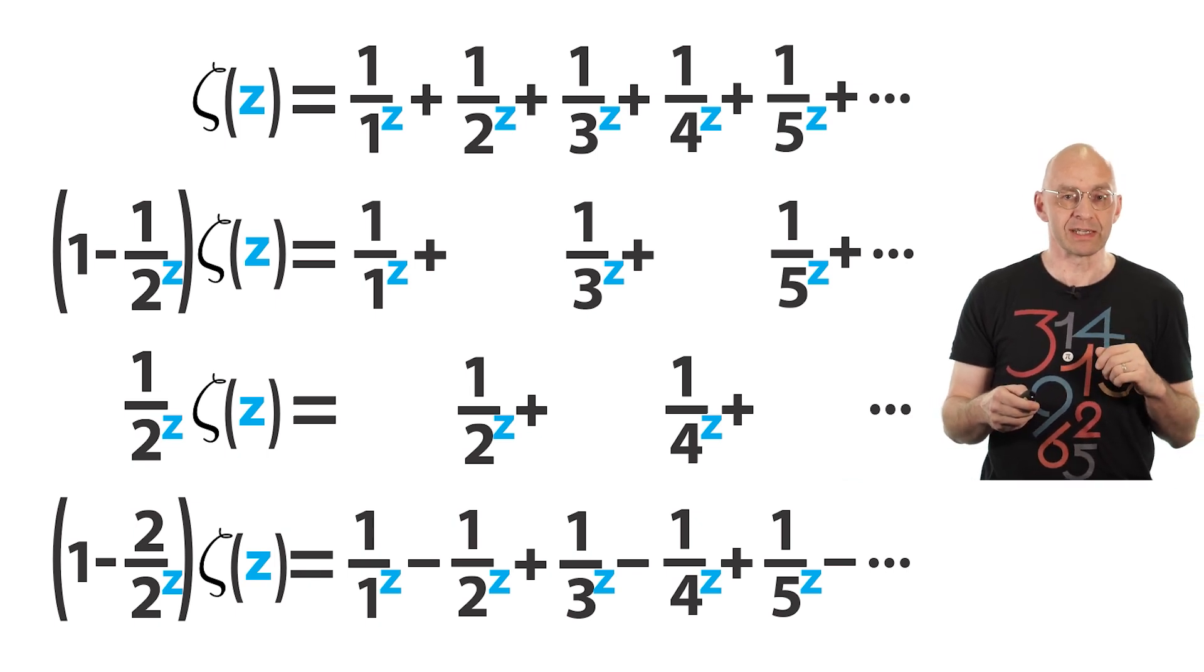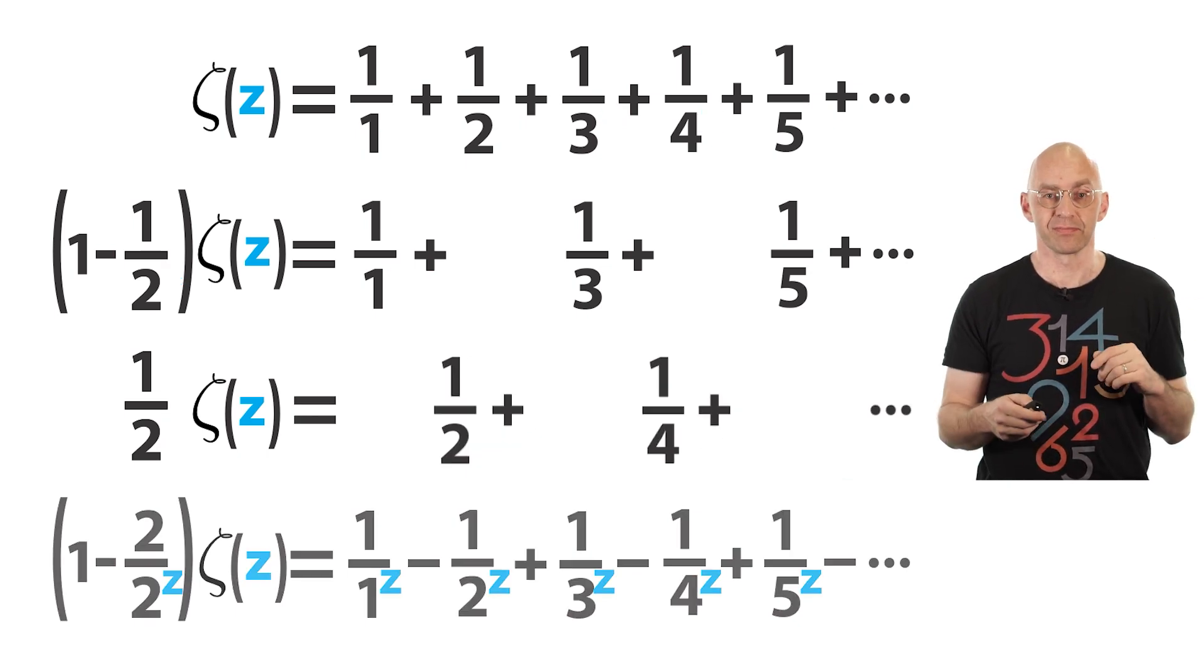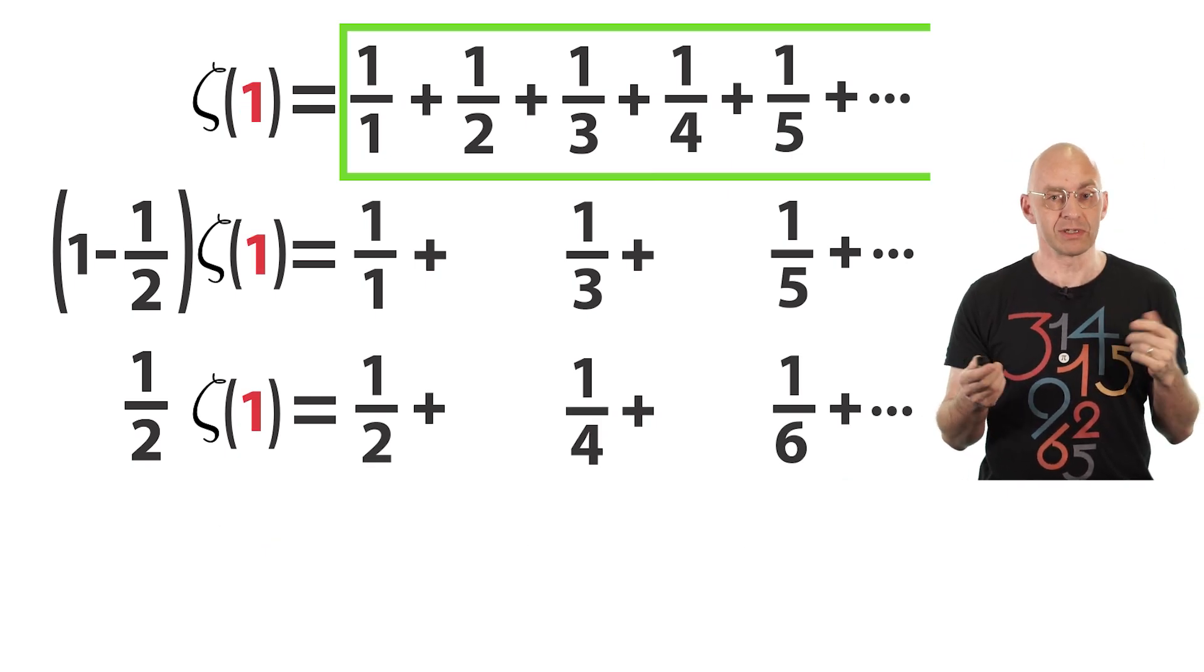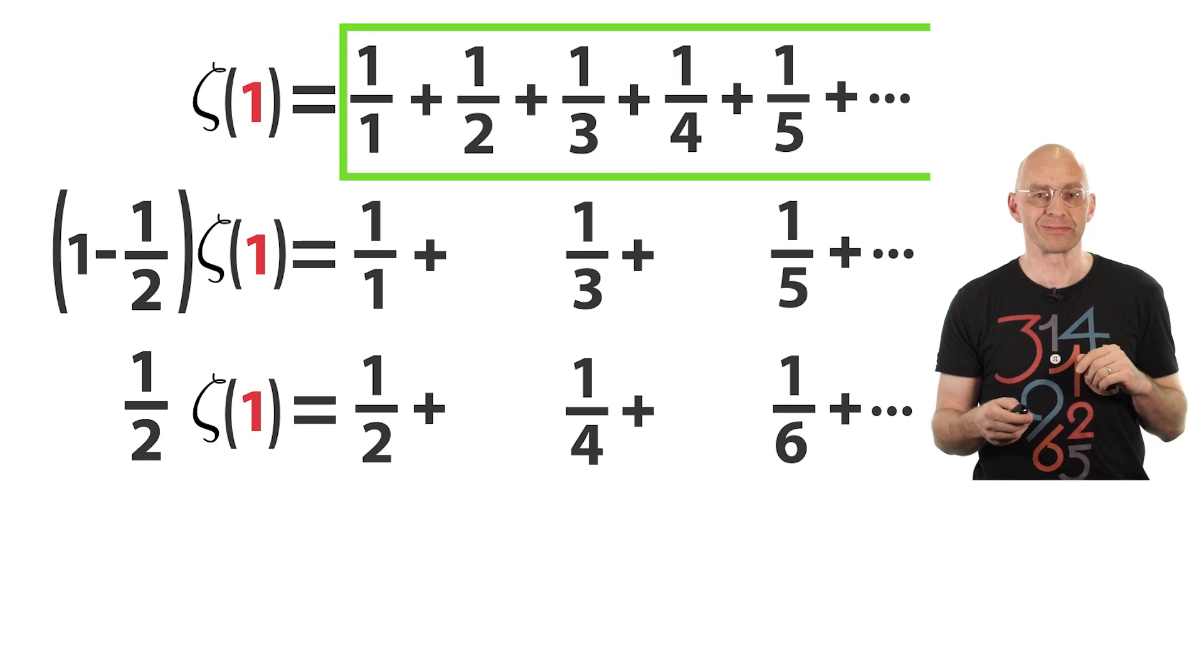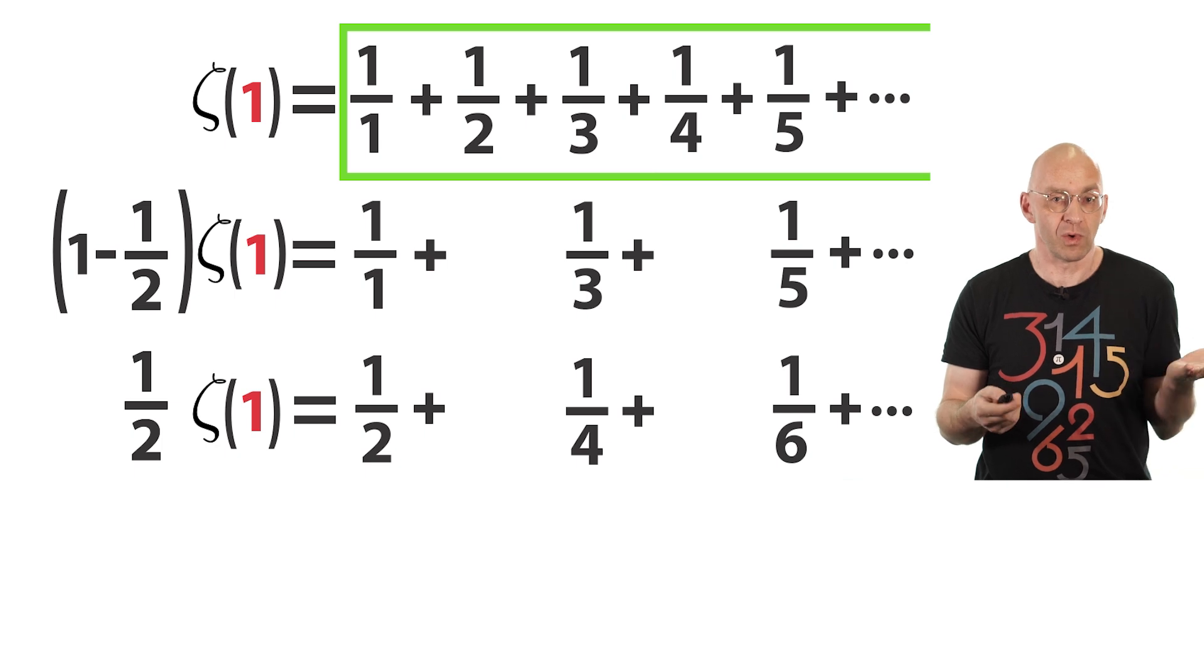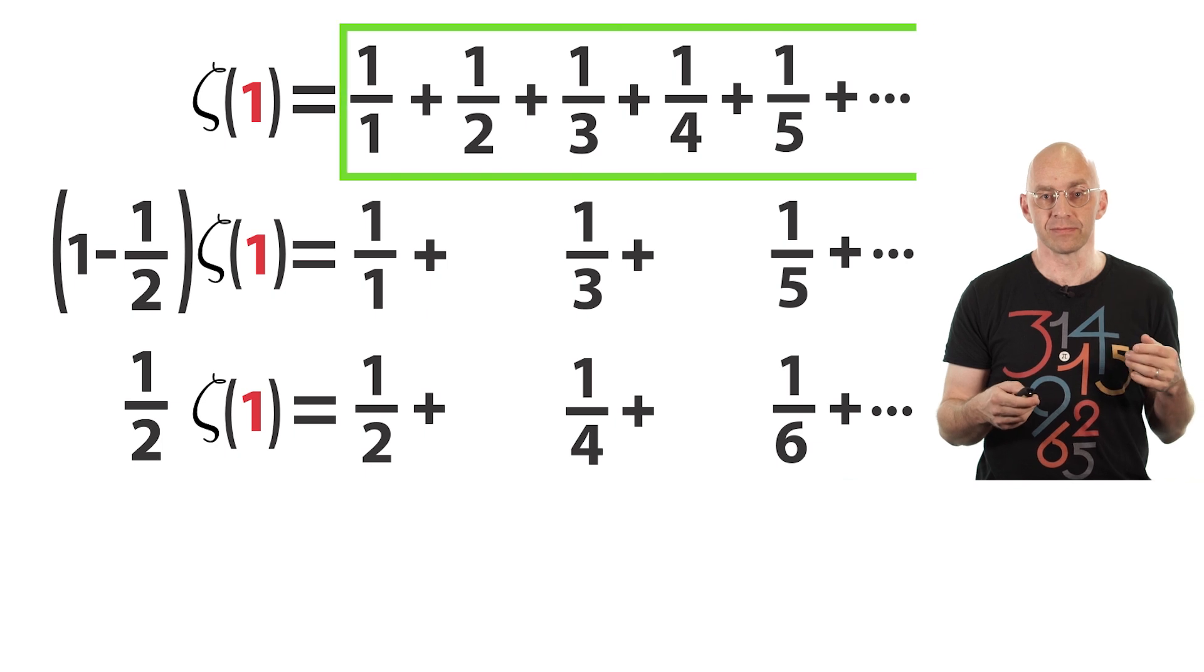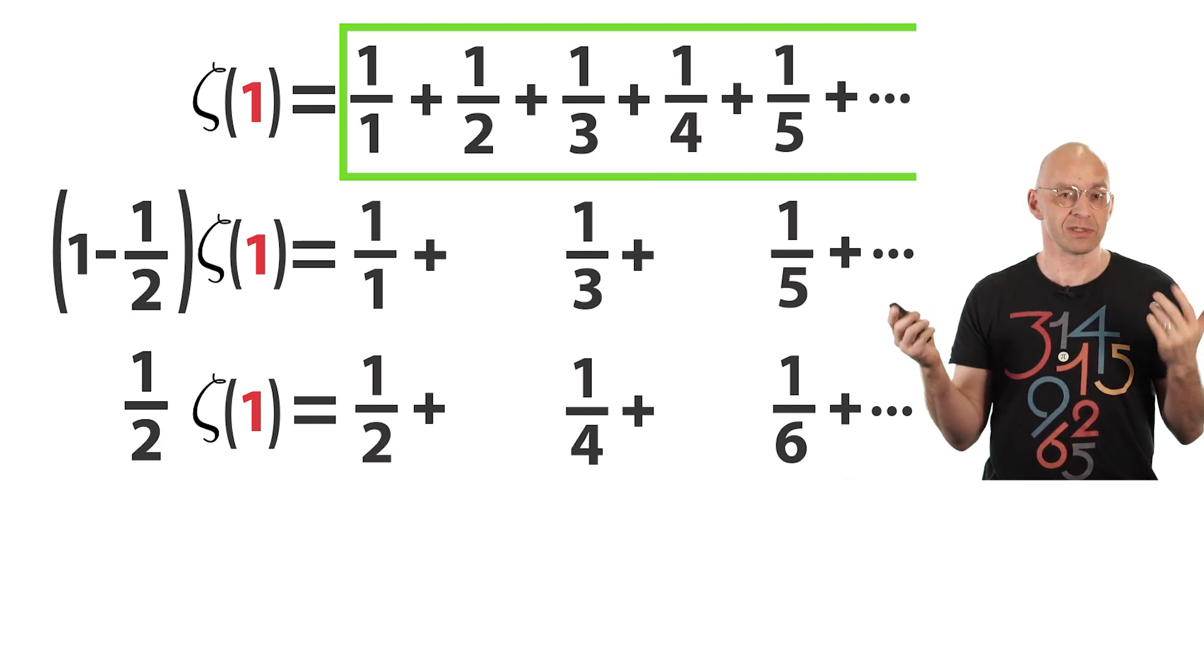Now as a first application of these identities, let's evaluate zeta at 1. That's a special value. The resulting infinite sum at the top is called the harmonic series and is one of the most important infinite sums ever. Of course, quite a few of you will know a lot about this infinite sum but bear with me. There's some nice stuff coming up here. As usual, to evaluate this infinite sum we just start adding. So 1 plus 1 half plus 1 third and so on.